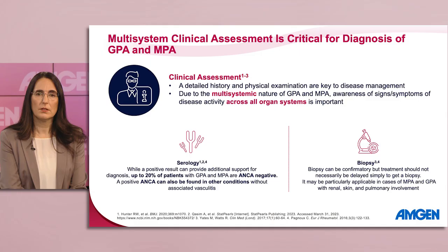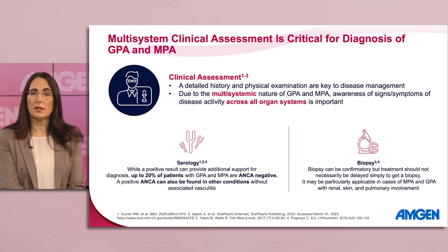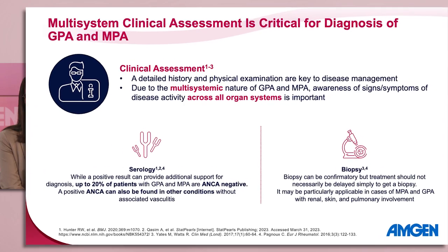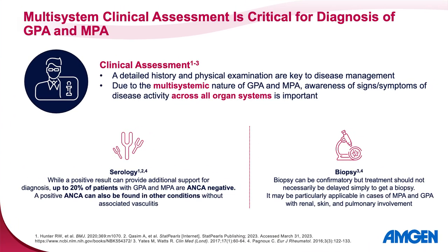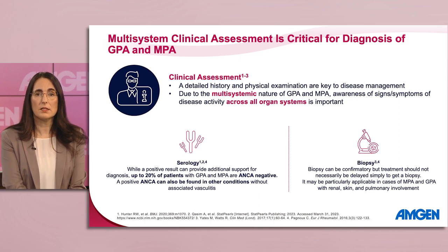Well, because of the heterogeneous and often non-specific presentation of GPA and MPA, multi-systemic involvement is often the clue that leads to diagnosis. For this reason, a careful and systematic approach to clinical assessment across multiple organ systems is critical for diagnosis. A supportive tool for diagnosis can include serology. However, it's important to note that while positive ANCA serology can help support diagnosis, up to 20% of patients with GPA and MPA may be ANCA negative.